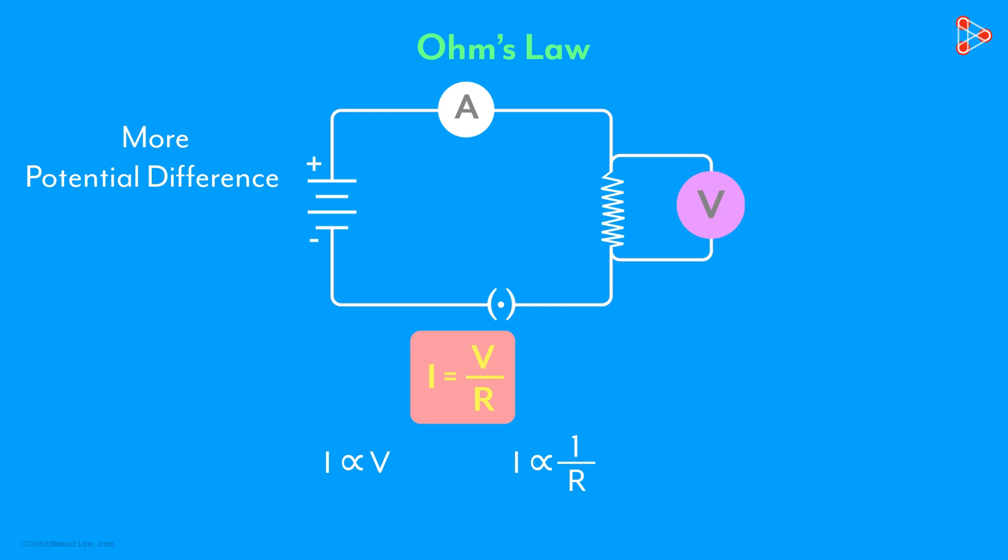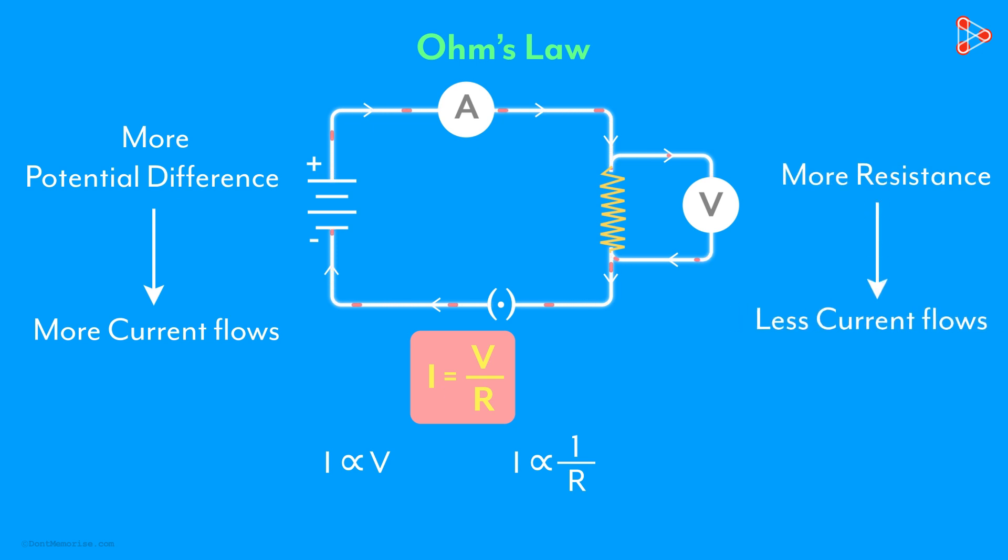If the potential difference between two points is more, the current flowing through it will be more. And if the resistance is more, the current flowing through it will be lesser. This is assuming that the other factors are constant.